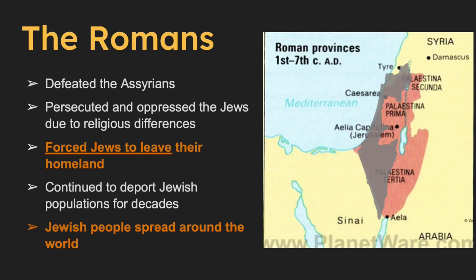The Roman Empire persecuted and oppressed the Jews and ultimately forced many of them out of their homeland in Israel during the 100s CE. The Romans were often at odds with the Jewish population due to their religious and cultural differences. The Romans implemented harsh policies aimed at stopping Jewish religious and cultural practices. When the Jewish people rebelled against the Romans, they faced terrible consequences.